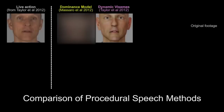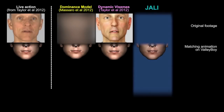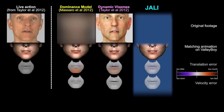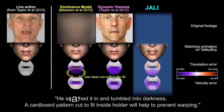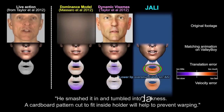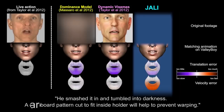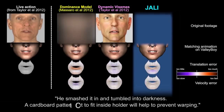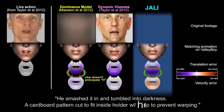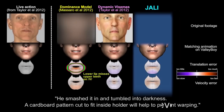Here we test the accuracy of JALI based on an actual live performance. We compare JALI to two existing procedural speech models: the dominance model and dynamic visemes. 'He smashed it in and tumbled into darkness. A cardboard pattern cut to fit inside holder will help to prevent warping.' He smashed it in and tumbled into darkness. A cardboard pattern cut to fit inside holder will help to prevent warping.